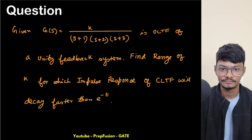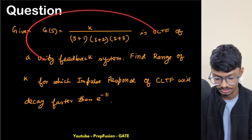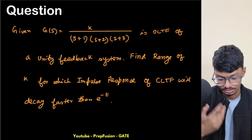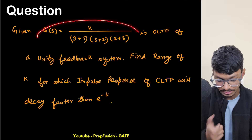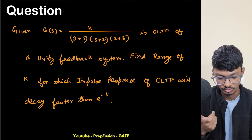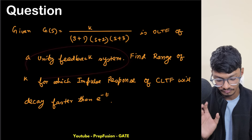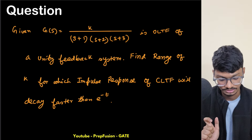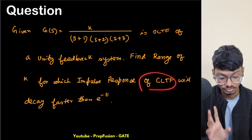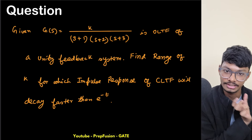Hey everyone, welcome back to Brave Fusion. Today the GATE EC paper happened and one question came from control systems. We are given the open loop transfer function k / [(s+1)(s+2)(s+3)] for a unity feedback system. We have to find the range of k for which the impulse response of the closed loop transfer function will decay faster than e^(-t).